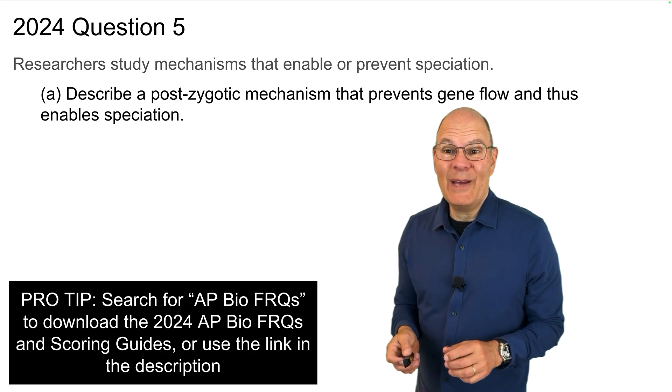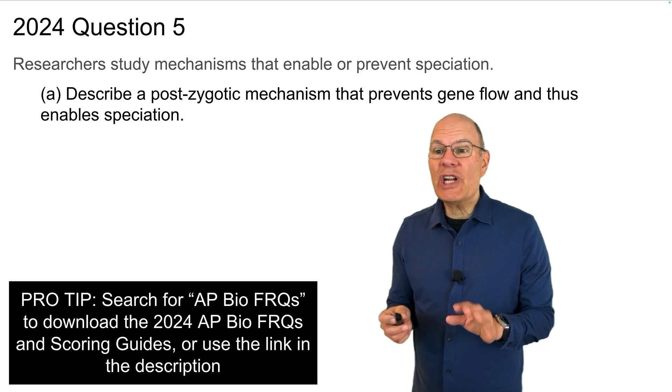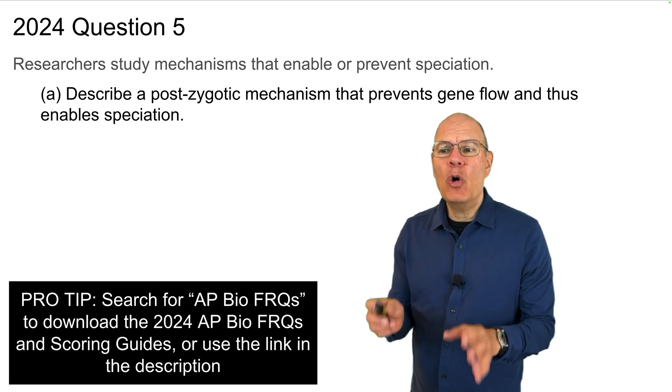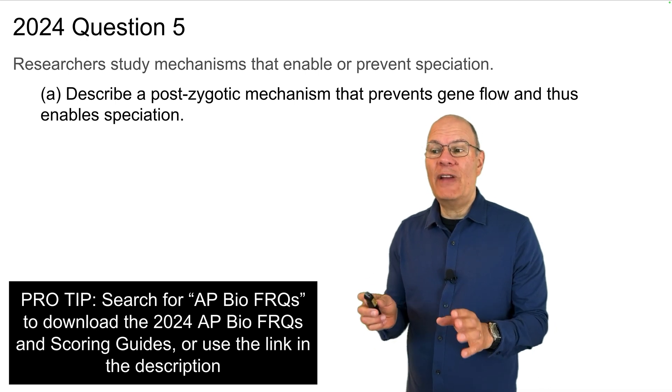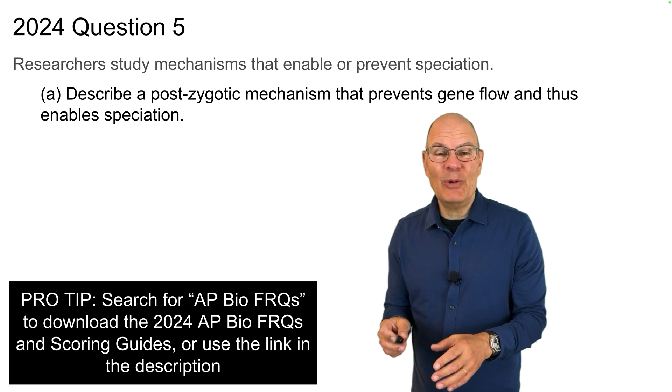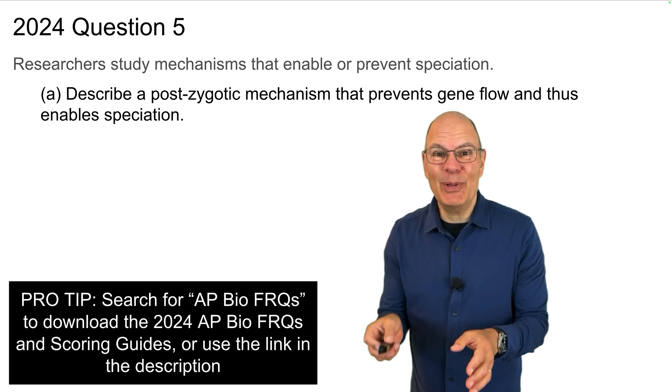Here's part A of question 5. Researchers study mechanisms that enable or prevent speciation. Describe a post-zygotic mechanism that prevents gene flow and thus enables speciation. Pause the video, write your answer. When you're ready to see my answer, hit play.